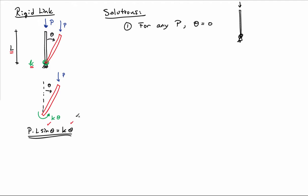I'll get zero equals zero. The solution here is the rod just simply remains straight up and down no matter what load value P I apply to it. That's the equilibrium of the system here.